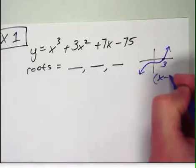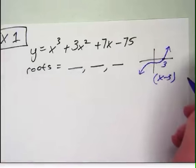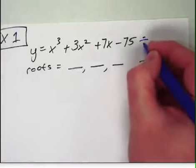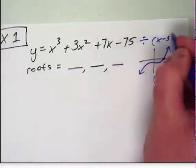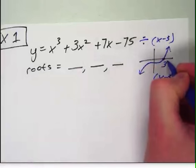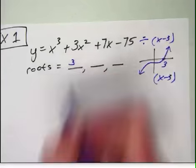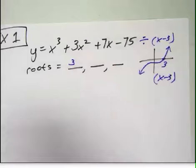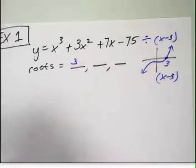If one of the roots is 3, that gives me the factor of x minus 3. So I'm going to take this equation, I'm going to divide it by x minus 3. And I get that because I know the one real root. I've now got one root, I need two more roots. This is about polynomial division, so let me show you how to do that.